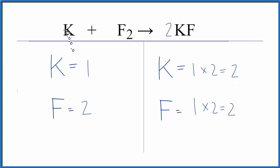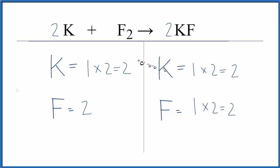That's not too bad to fix. We can put the coefficient in front of the K and change that to two. One times two equals two. So now everything's the same on each side — this equation is balanced. This is Dr. B with the balanced equation for K plus F2 yields KF. Thanks for watching.